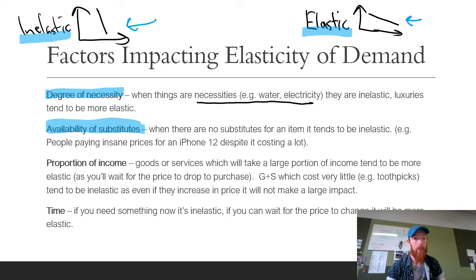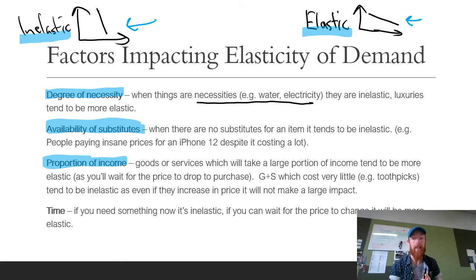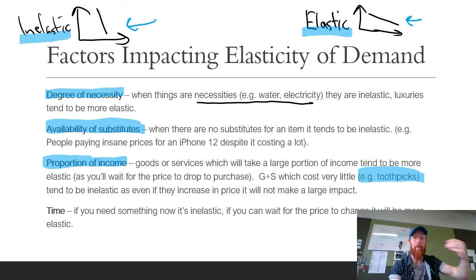Then we have proportion of income. Goods and services which take a large portion of income tend to be more elastic, as you'll tend to wait for the price to drop to make a purchase. This is true of things like housing and assets — if house prices go down, demand for housing is going to go up a whole lot. Whereas when goods and services cost very little — the example here is toothpicks — they tend to be inelastic because even if they increase in price, say from a few cents to five cents, it's not really going to make an impact on your demand.